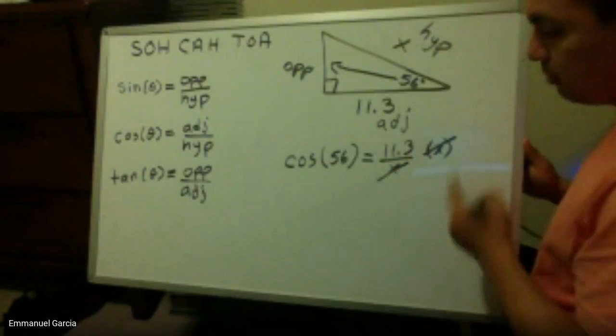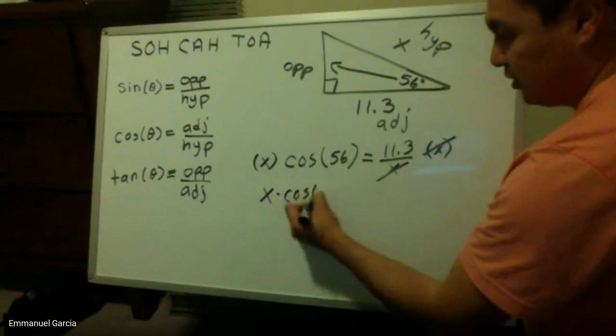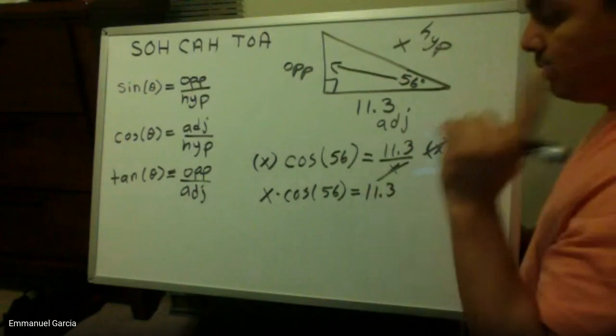But whatever I do to one side I do it to this side. So now I have my x here. So x times cosine of 56, x times cosine of 56 degrees equals 11.3.